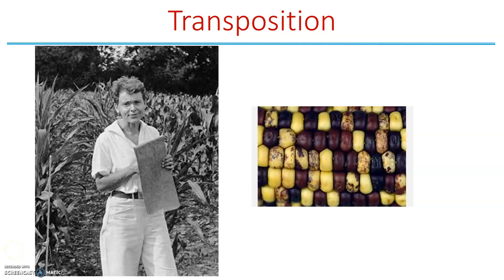Now we're going to turn our attention to transposition, or transposons — those jumpable genes we've mentioned before. First, I'll note that this is Barbara McClintock, and in the early 1950s, her work with corn plants actually helped to identify transposons. So make sure you write that down: Barbara McClintock, 1950s, corn plants, transposable elements.